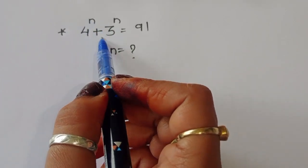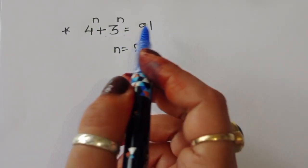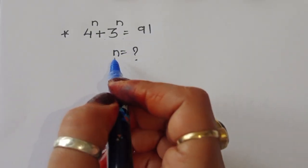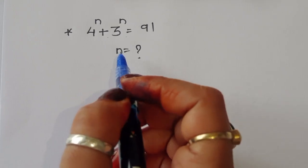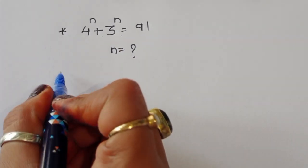4 power n plus 3 power n is equal to 91. We have to find out the value of n. Let's see the solution.